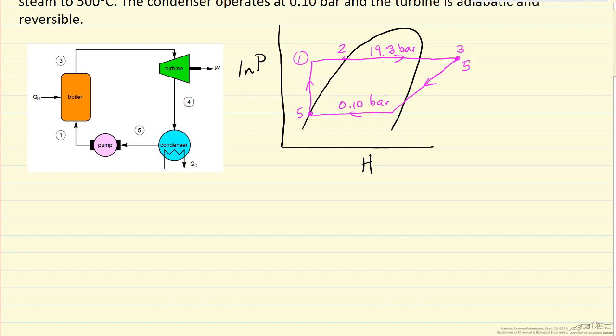First, let's find H3. We're given 500°C and 19.8 bar, so it's superheated steam, and we can look it up in the steam tables. I've also listed the entropy because S3 equals S4, since this turbine is reversible.